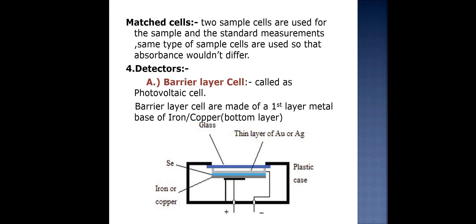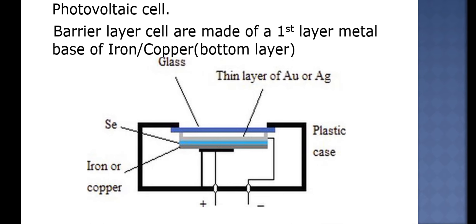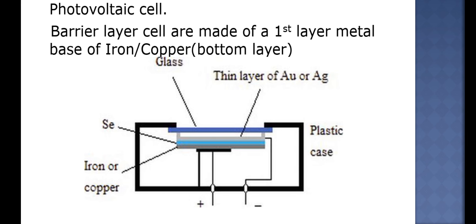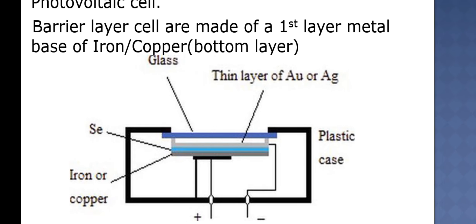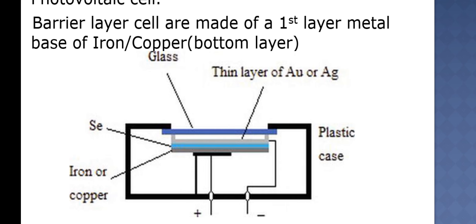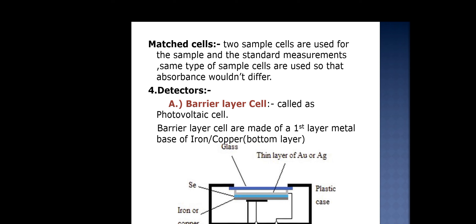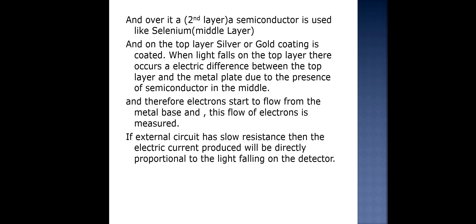The fourth instrument is the detector. The first type is the barrier layer cell, also called the photovoltaic cell, which has three layers. The topmost layer consists of silver or gold plating, under which a selenium semiconductor is coated, and the bottom layer consists of iron or copper as a metal base. This layer is connected with the circuit. When light falls on the topmost silver or gold layer, a conductivity difference — or electrical difference — occurs between the top and bottom layers. Due to this, electrons flow from the iron or copper layer towards the circuit, and these electrons are measured. If the external circuit has low resistance, the electrical current produced will be directly proportional to the amount of light falling on the detector.